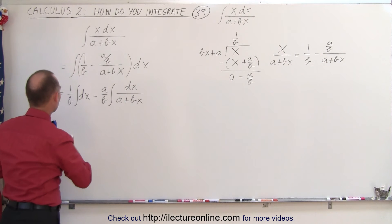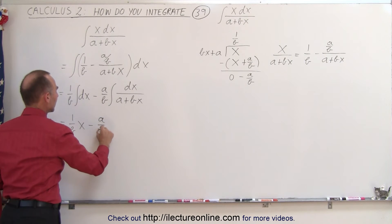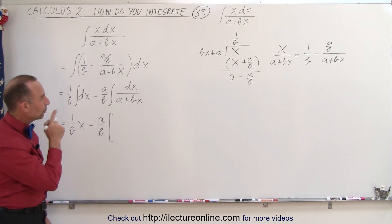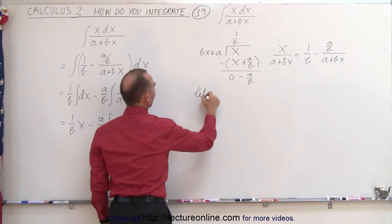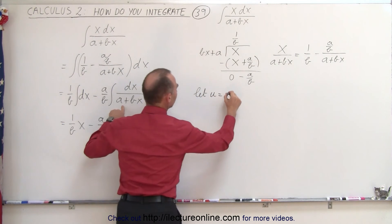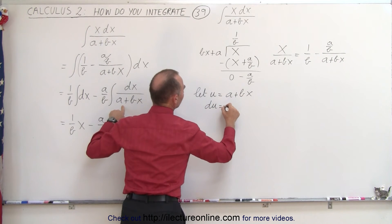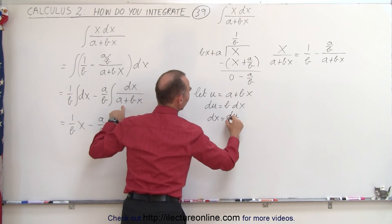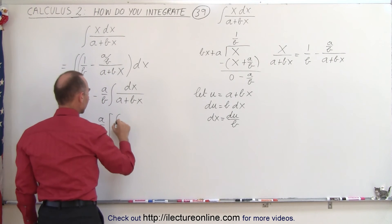On the first one, we can simply write it like this. This is equal to 1 over b times x minus, and the second integral will be a over b times. Now, what we're going to do there is we're going to use that substitution rule. So here we can see that let u equal the denominator a plus bx. So du is equal to b dx, or dx is equal to du divided by b. So we can substitute that in here.